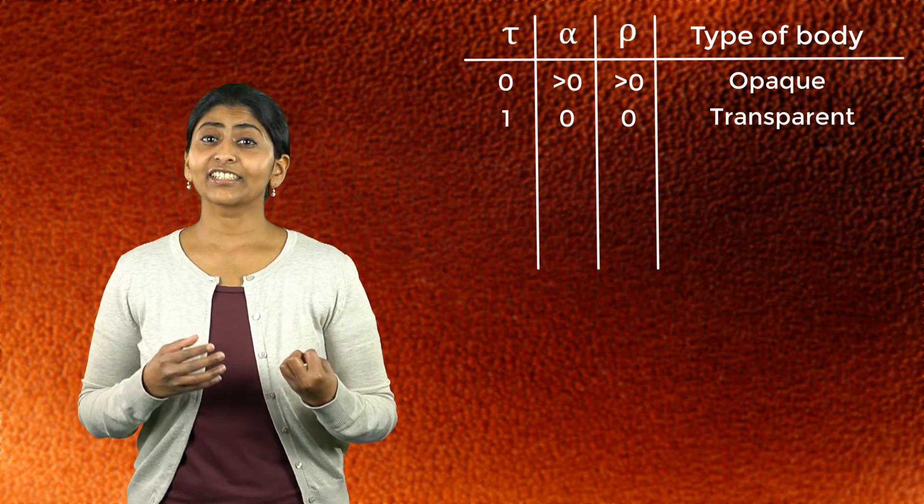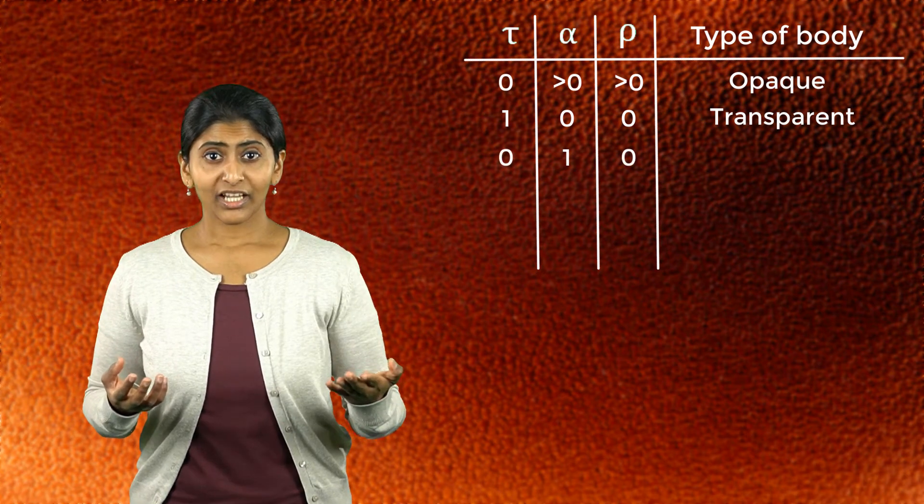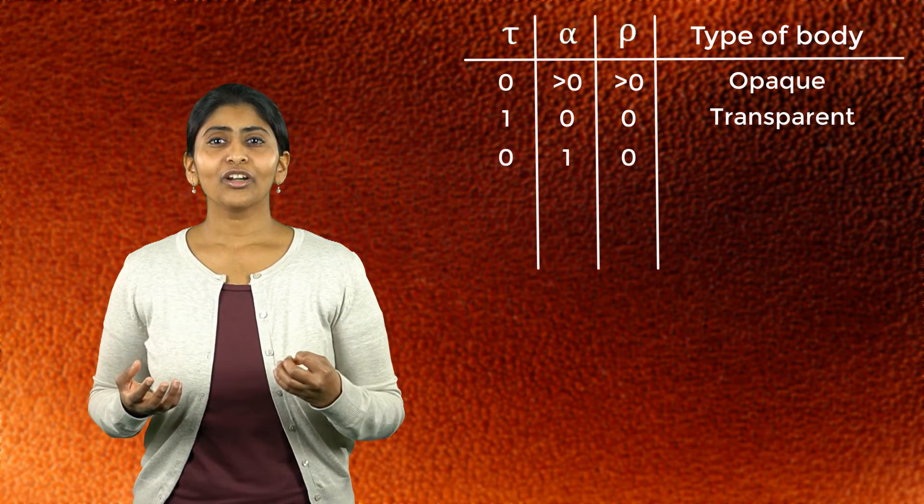If a body absorbs all the incident radiation, that is its absorptivity is 1 and the other two components are 0, then that body is called a black body.